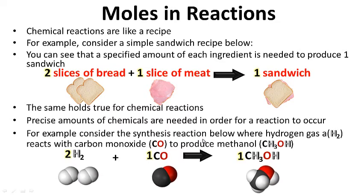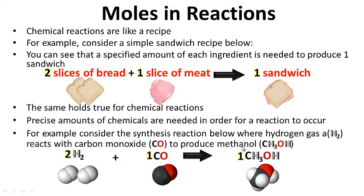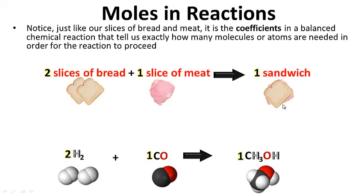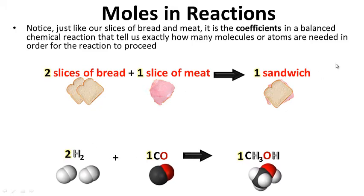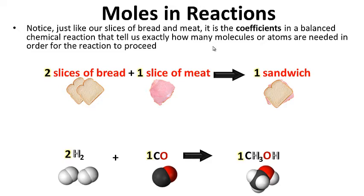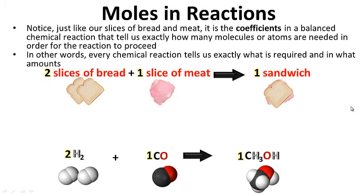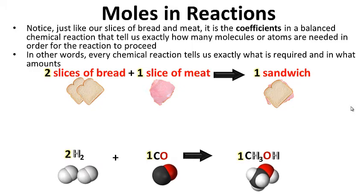For example, consider the synthesis reaction where hydrogen gas, H2, reacts with carbon monoxide to produce one molecule of methanol. Notice, just like our slices of bread and meat, it is the coefficients — two, one, and one — in a balanced chemical reaction that tell us exactly how many molecules or atoms are needed for the reaction to proceed. So two molecules of H2 and one molecule of CO makes one molecule of methanol. Every chemical reaction tells us exactly what is required and in what amounts, just like a recipe.